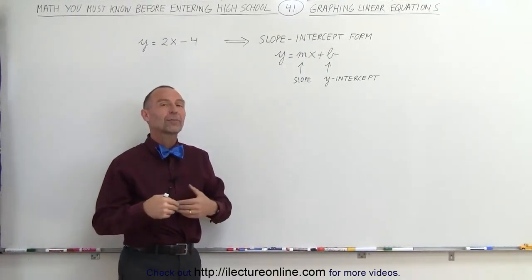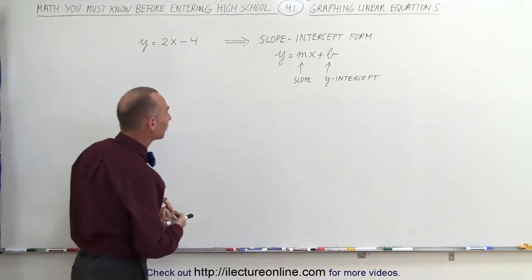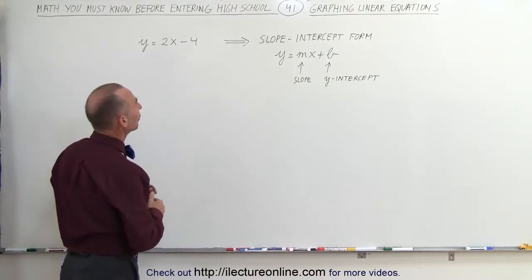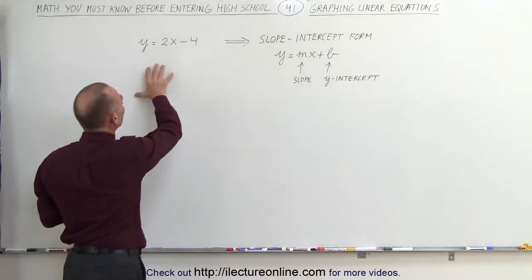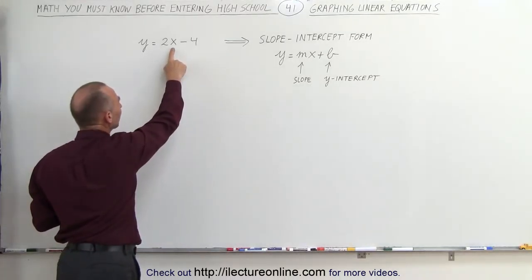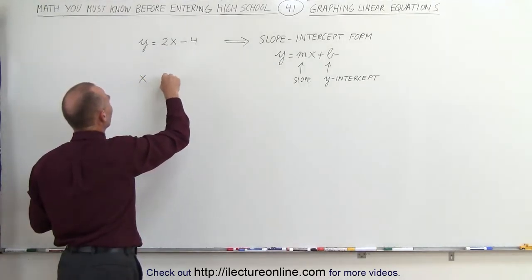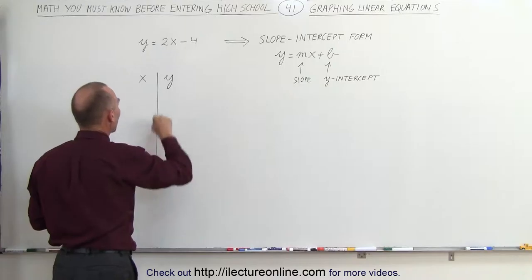We'll also learn how to set up a table of values to help us graph things on the xy-plane. So the first thing we're going to do is put a table of values together. Since x is the independent variable and y is the dependent variable, that means the value for y depends upon what we place in for x. We're going to put in certain values for x and see what the corresponding values for y are.